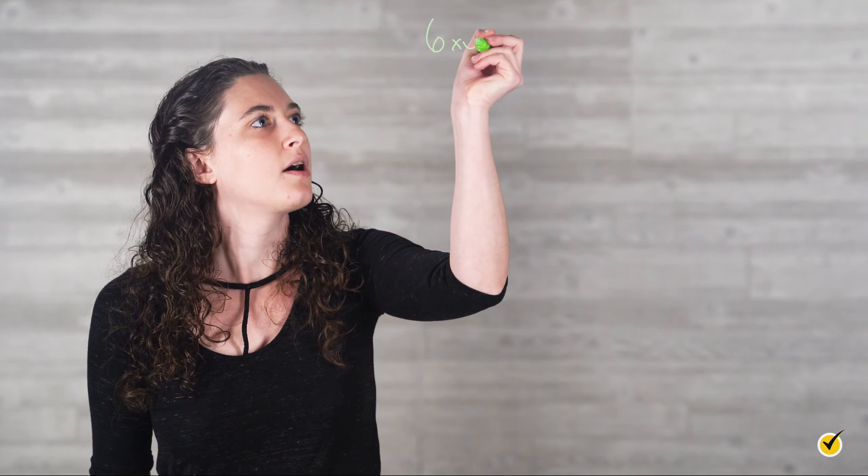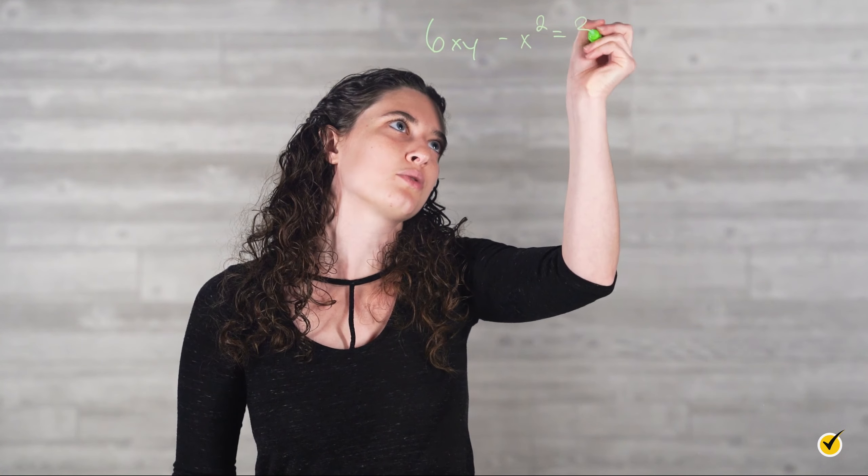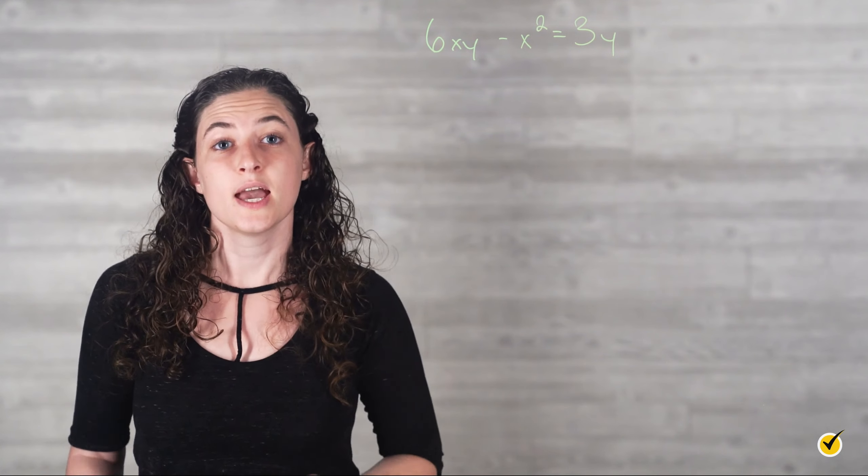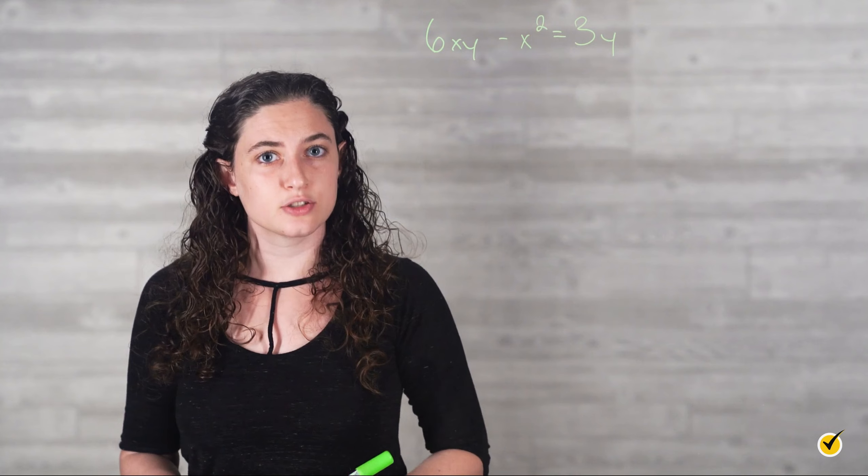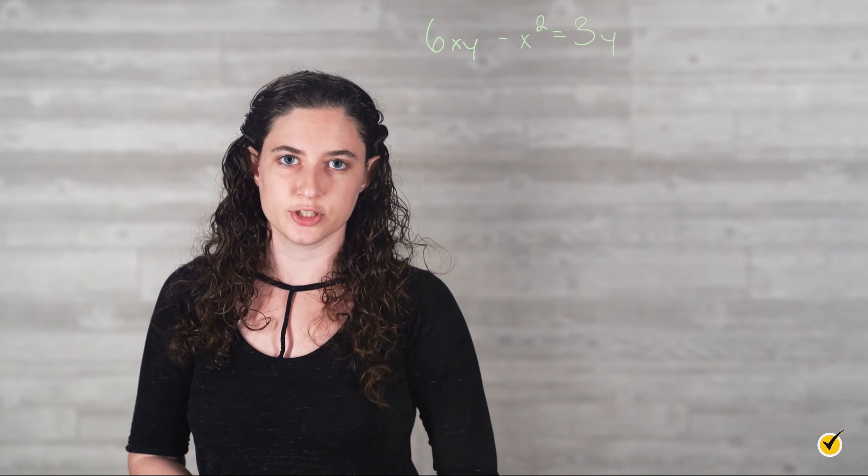As I mentioned before, many of the functions that require implicit differentiation are not functions at all because they often cannot be expressed in the regular y equals format and consequently do not pass the vertical line test. For this reason, it is more appropriate to call such equations relations instead of functions. Let's start by considering the relation 6xy minus x squared equals 3y and finding dy over dx through the process of implicit differentiation.